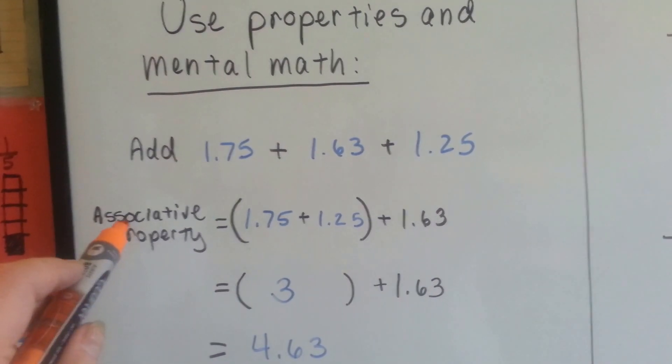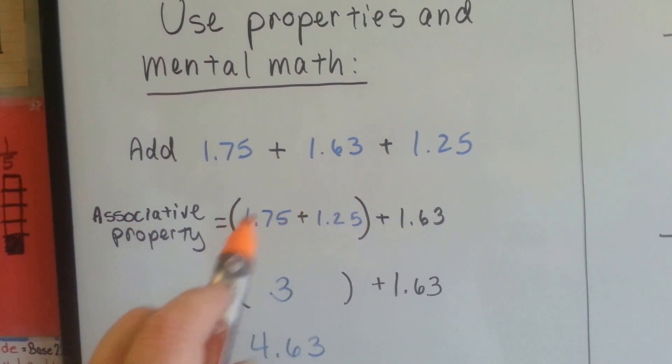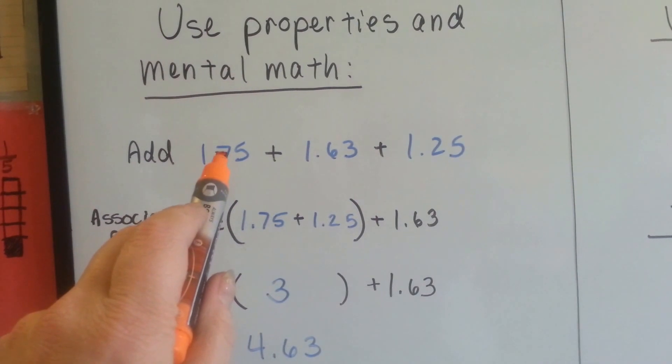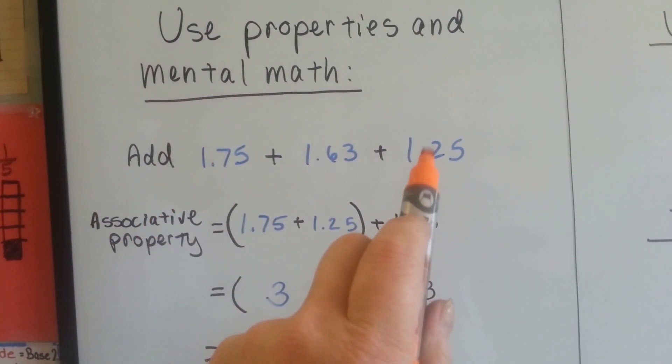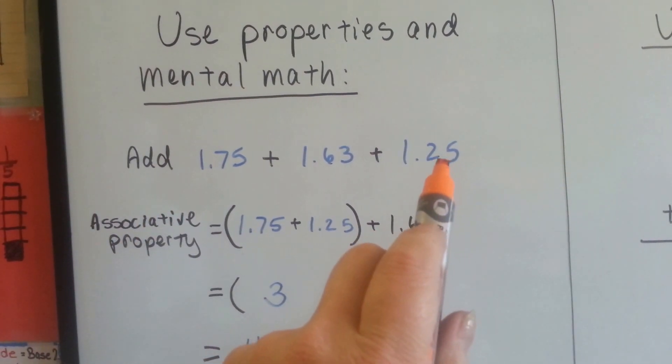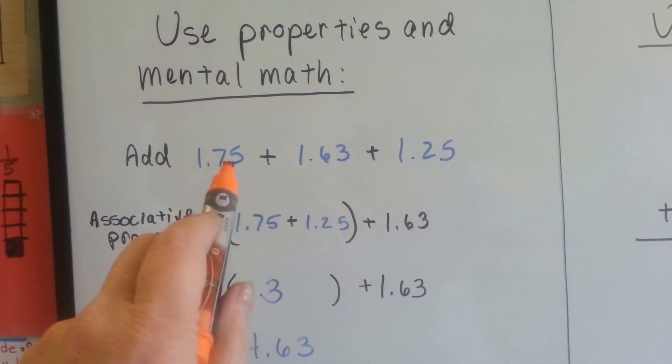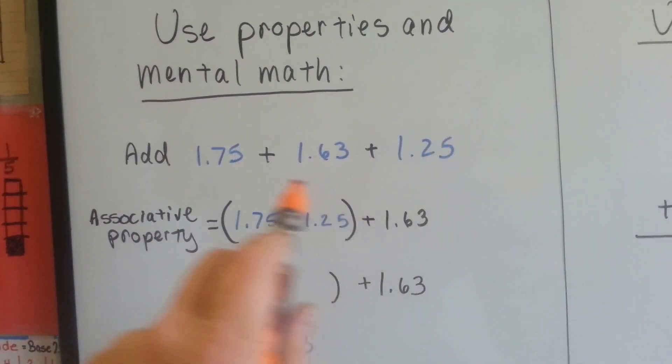We can use the associative property, and we could group together the two that are more compatible. The 1.75 can be added, mental math, very quickly to the 1.25, because if we think money, if we add this 25 to the 75, then we have another dollar, don't we?